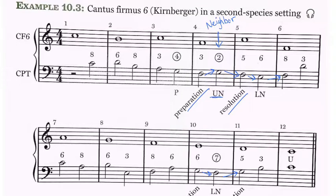The lower neighbor in measure five does not need to be circled, even though I just circled it, because it's a consonant neighbor. The sixth is consonant. But whenever you write a dissonant neighbor, please circle it and label it as an upper neighbor or a lower neighbor. Notice also, if we back up to measure three, that there is a passing tone of a dissonant fourth.